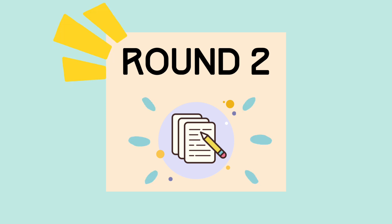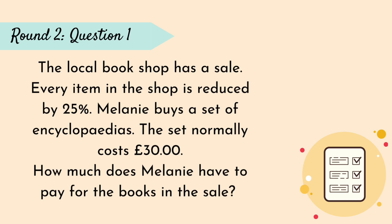Round 2, Question 1. The local book shop has a sale. Every item in the shop is reduced by 25%. Melanie buys a set of encyclopedias. The set normally costs £30. How much does Melanie have to pay for the books in the sale?